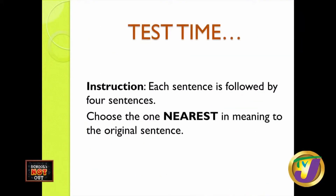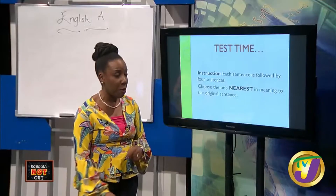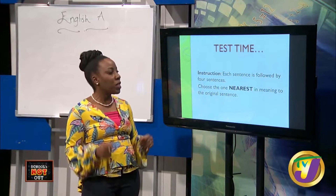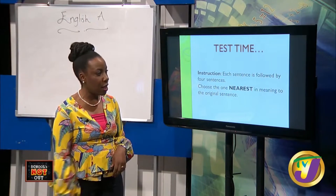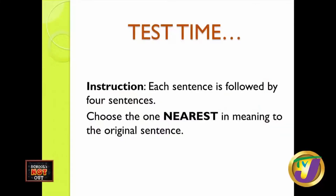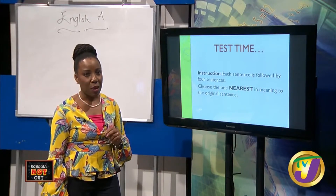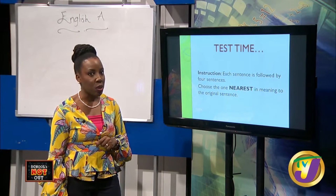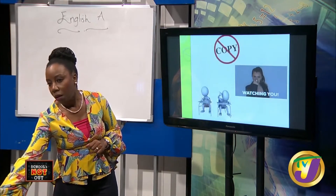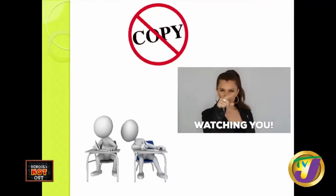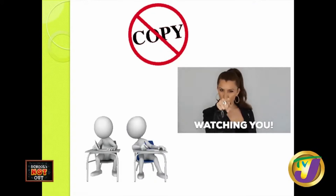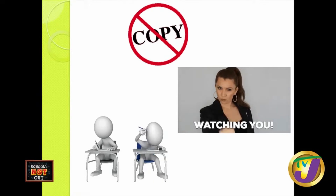Now it's test time. Each sentence is followed by four sentences. Choose the one nearest in meaning to the original sentence. Sometimes half of a sentence may be correct but the other half doesn't suit, so choose the one that is nearest in meaning. Please separate yourselves — no copying — I will be watching you.